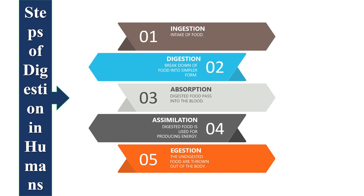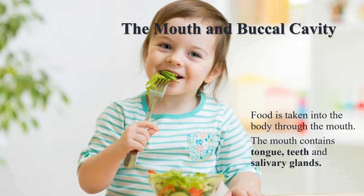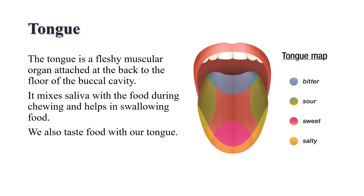Now we will study about these steps in detail. Food is taken into the body through the mouth. The process of taking food into the body is called ingestion. The mouth contains tongue, teeth, and salivary glands. The tongue is a fleshy muscular organ attached at the back to the floor of the buccal cavity. It is free at the front and can be moved in all directions.